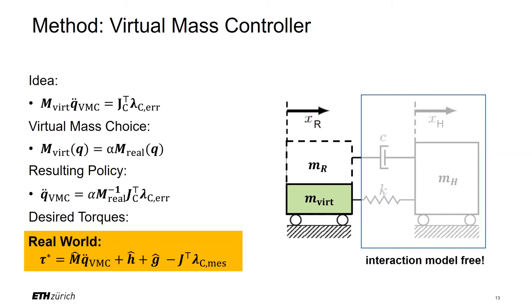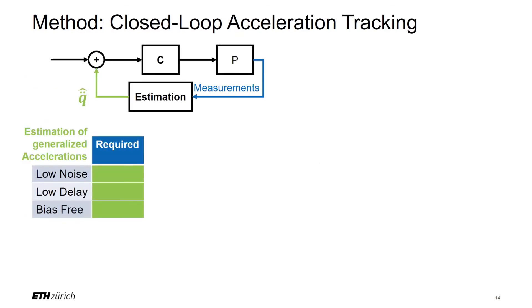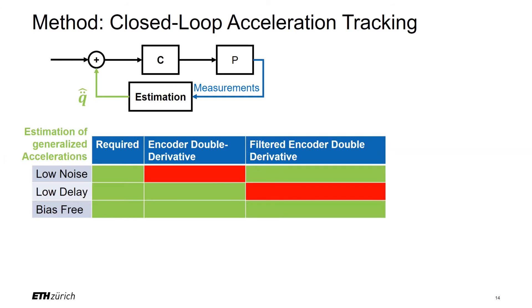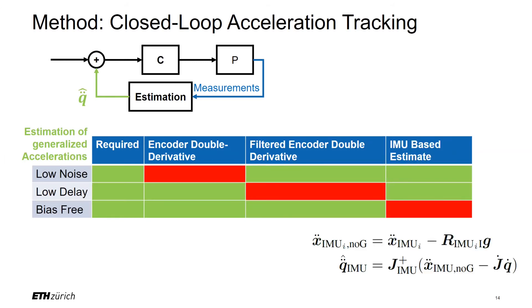In the real world, there are model errors which would disturb the tracking of the desired accelerations. To further improve the controller performance, we want to apply closed-loop control for the accelerations too. As a feedback signal for the acceleration tracking, we are looking for generalized accelerations with low noise, low delay, and no bias. The options that we have is the second derivative of the encoder measurements, which are afflicted by powerful noise, the filtered version of the same signals which have dominant delay, or the estimate of the generalized accelerations based on the IMU measurements. Since the IMUs on the PCBs of the actuators and the load cells are fairly cheap and inaccurately mounted, there is a dominant bias which cannot be calibrated efficiently.